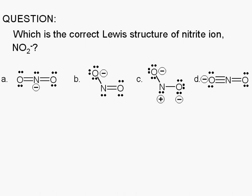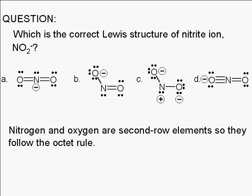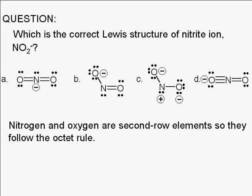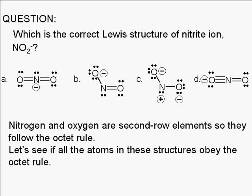Which of the structures given is the correct Lewis structure for the nitrite ion, NO₂ with a negative 1 charge? We know that nitrogen and oxygen as second row elements will follow the octet rule, so let's see if all the atoms in these structures obey the octet rule.